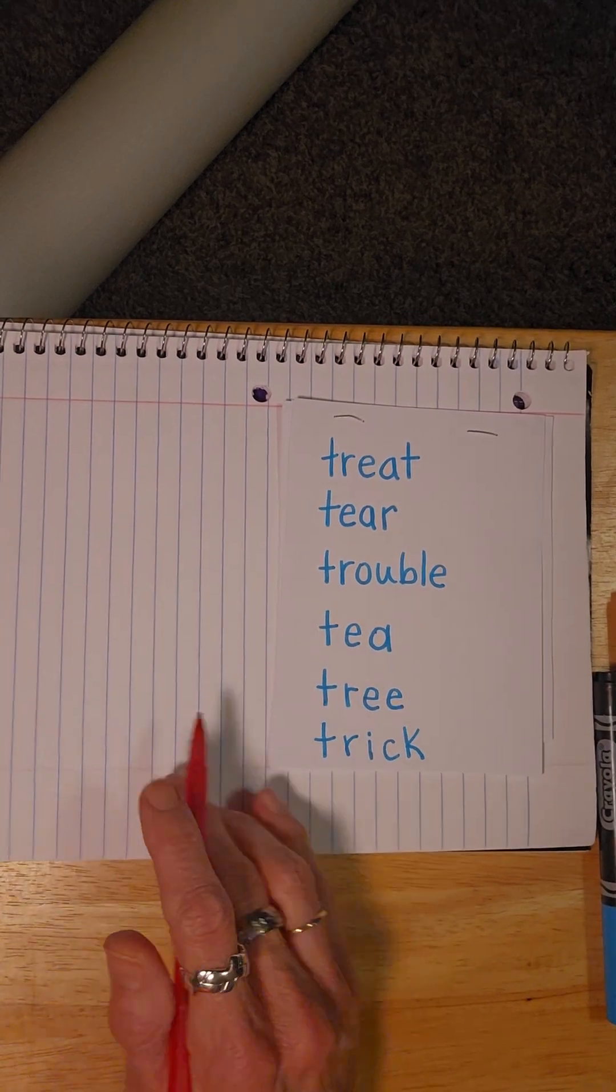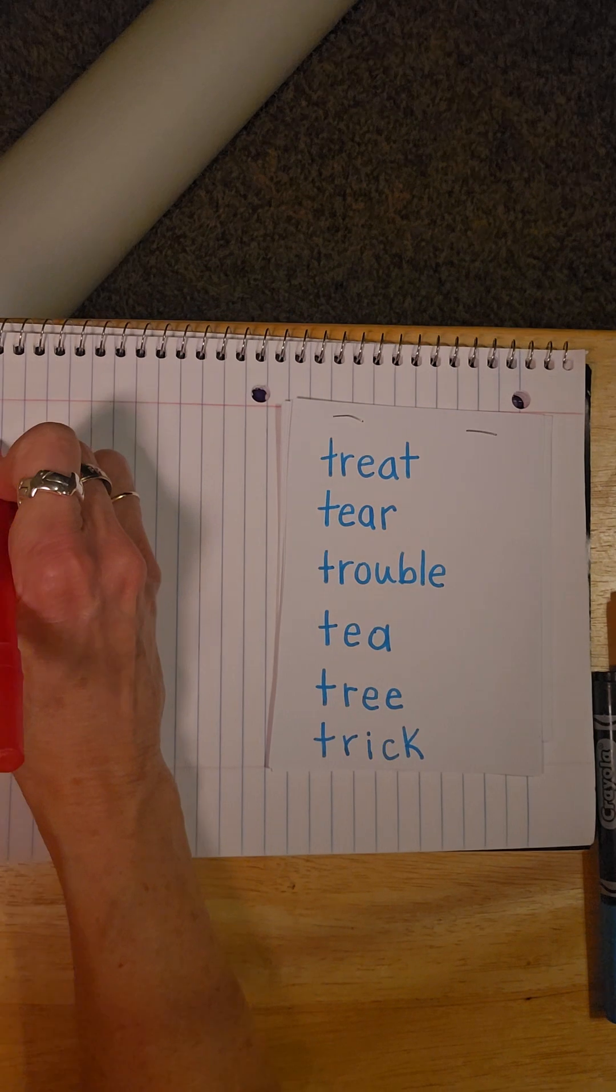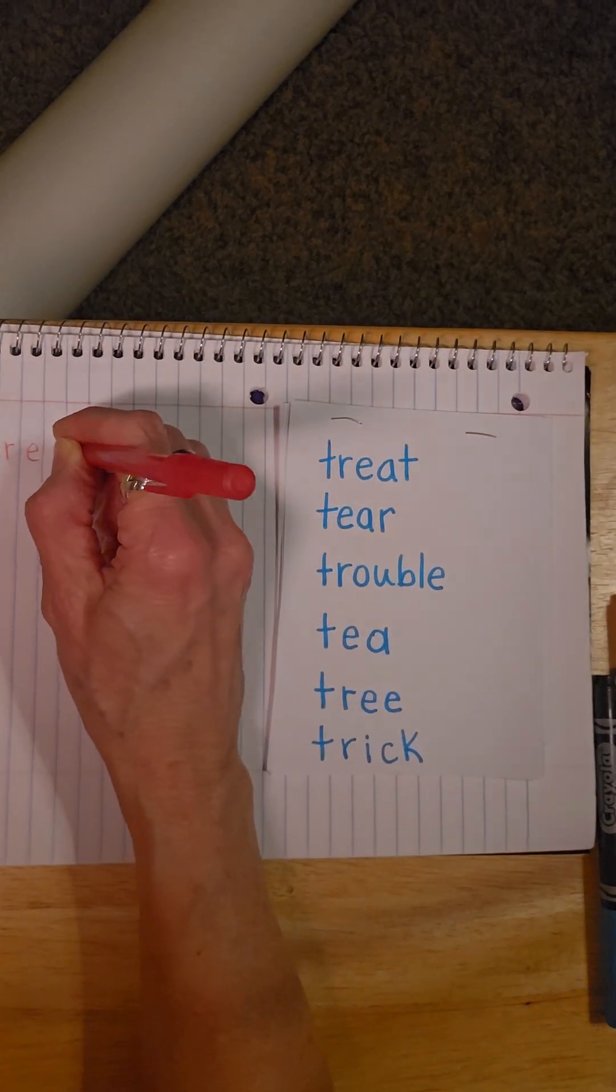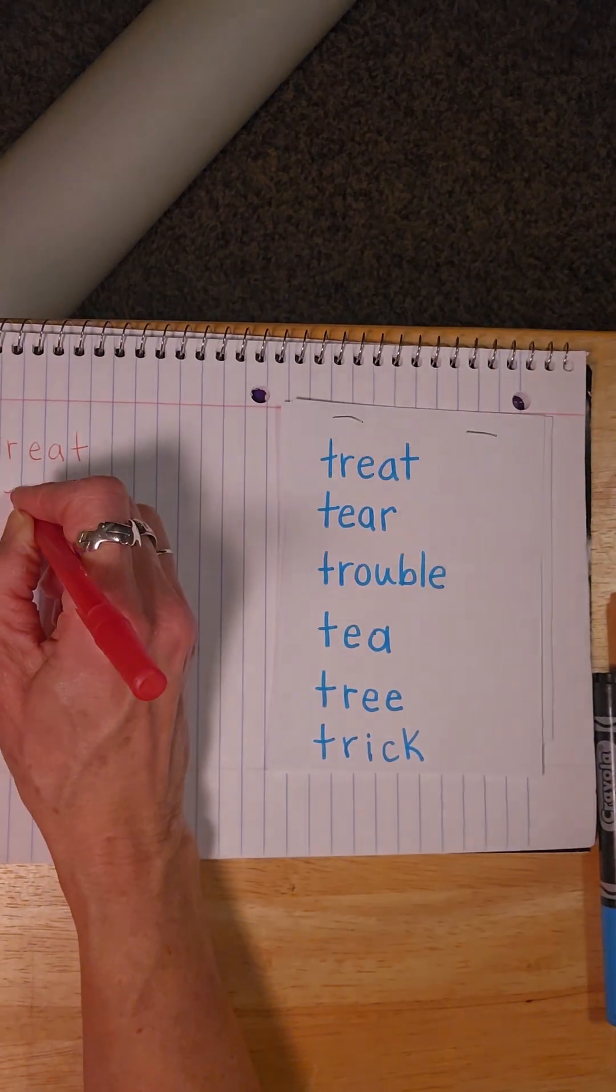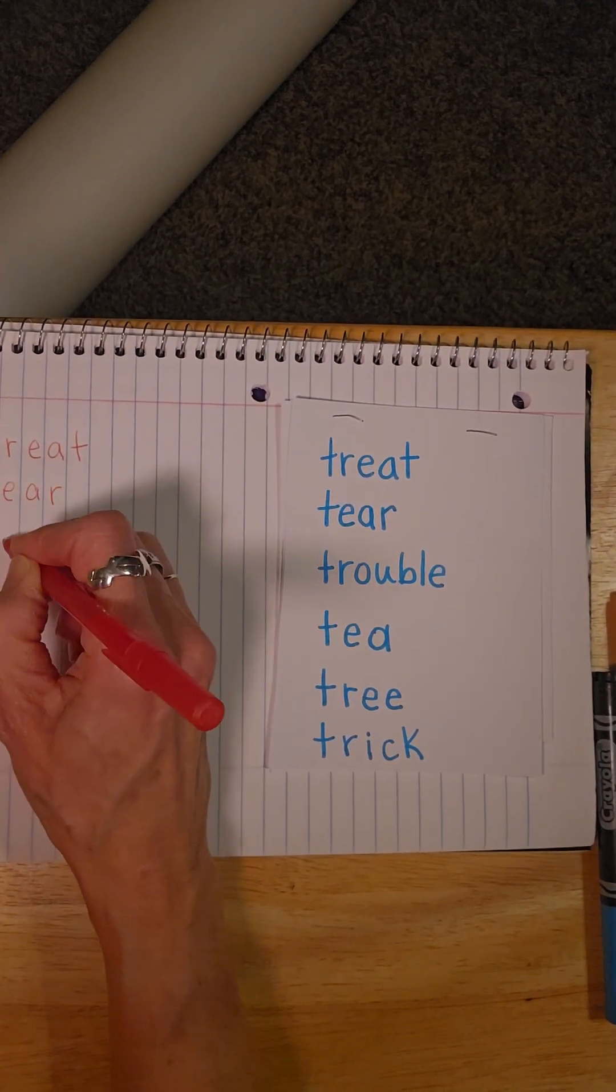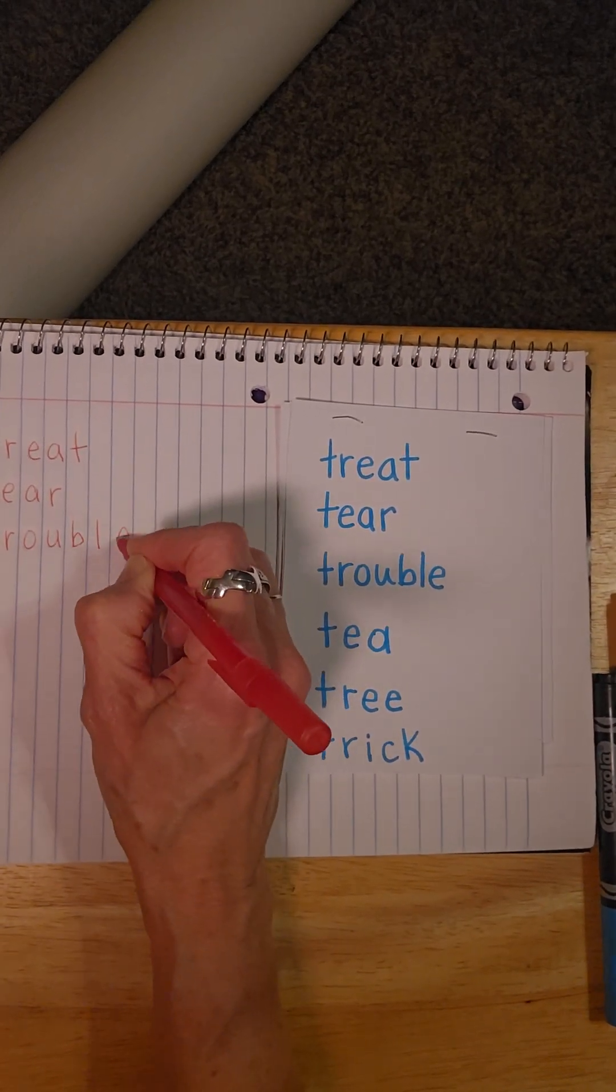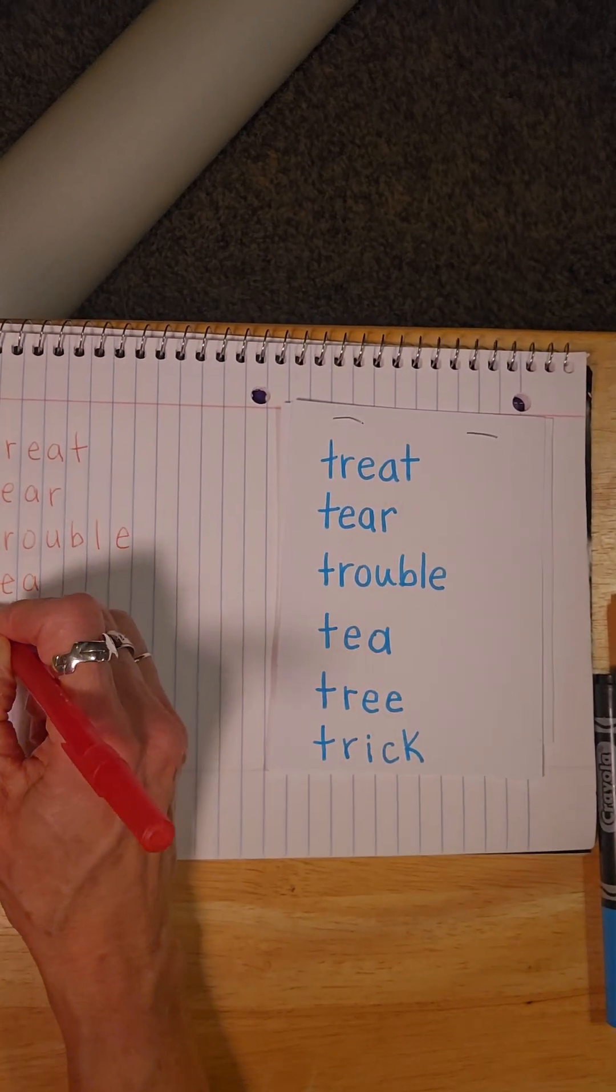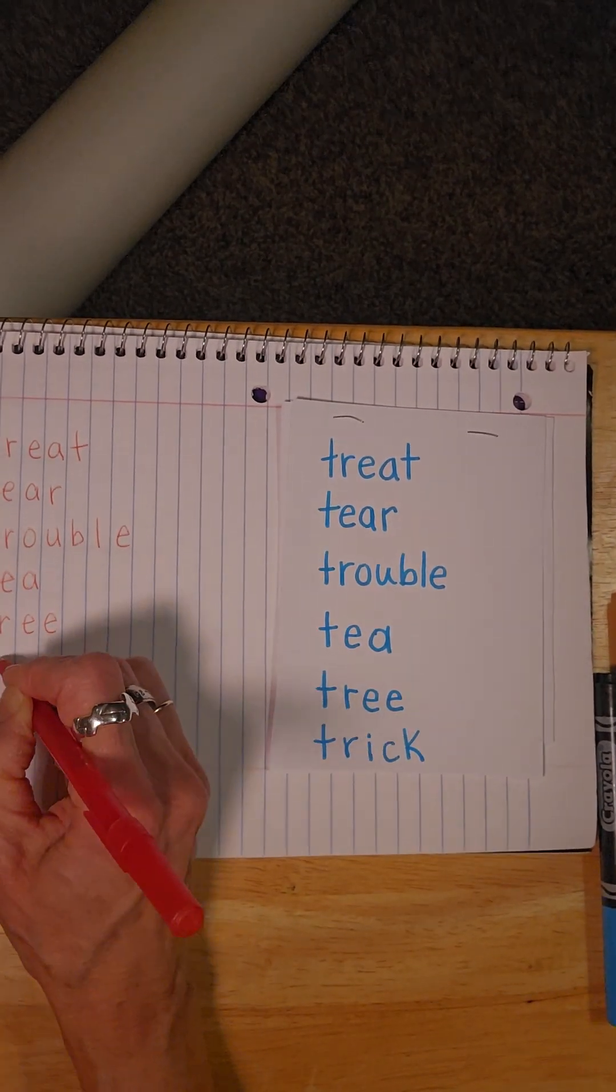So I'm going to rewrite my words over here inside each line. I'm going to write the word treat, T-R-E-A-T, and then we have tear, T-E-A-R, and then trouble, T-R-O-U-B-L-E. We have the word tea, T-E-A, tree, and then we have the word trick.